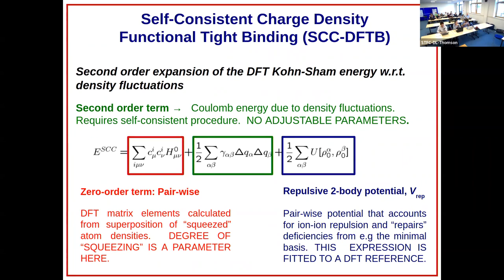This repulsive potential is almost always fitted towards a DFT reference - a number of structures that you may be interested in. You're trying to fit the parameters involved here in order to as closely as possible reproduce these energies of your reference set.